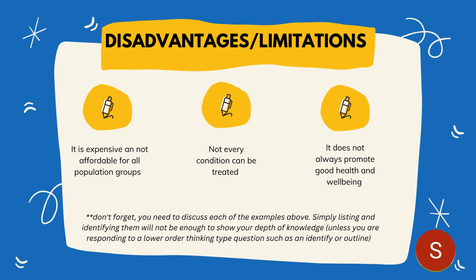Not every condition can be treated either. For example, if someone has a heart attack and gets surgery, but doesn't fix the behaviours that led to the heart attack — such as physical inactivity or a poor diet — they may have another heart attack and require surgery again. There are also some conditions that, even through treatment, may not be cured. Cancer is a really good example of that. These are the disadvantages of the biomedical model, and it is important to understand the explanation rather than just identifying each example.